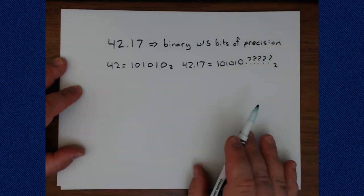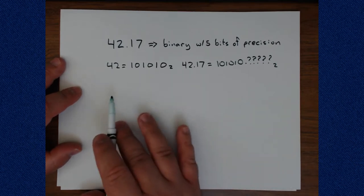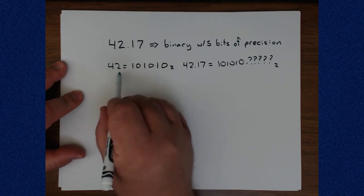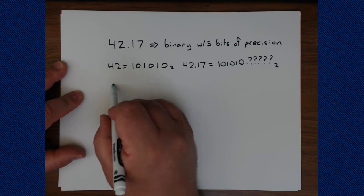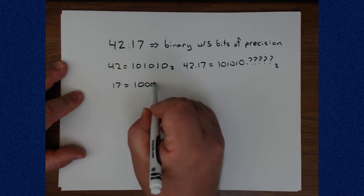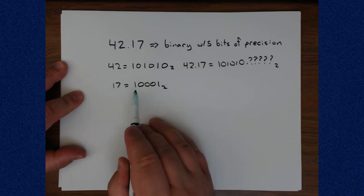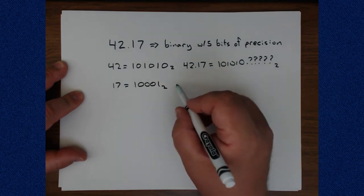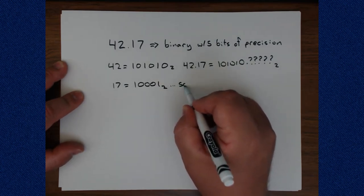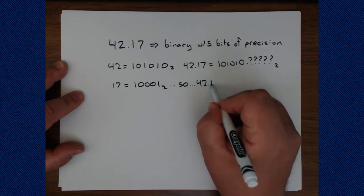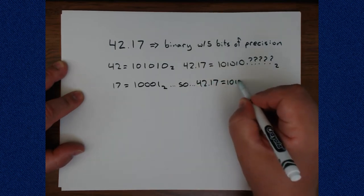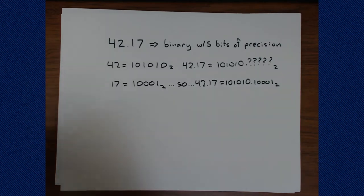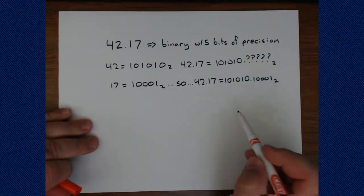So how do we figure out what those five mystery bits are? Well, I have seen many students do this incorrectly. What they typically do is, much like they say 42 is this bit pattern, they write that 17 is this bit pattern. And lo and behold, it's 1, 2, 3, 4, 5 bits. So it seems like this works into our five-bit precision angle. So 42.17 must be 1, 0, 1, 0, 1, 0 point 1, 0, 0, 0, 1 binary. But this is totally wrong.